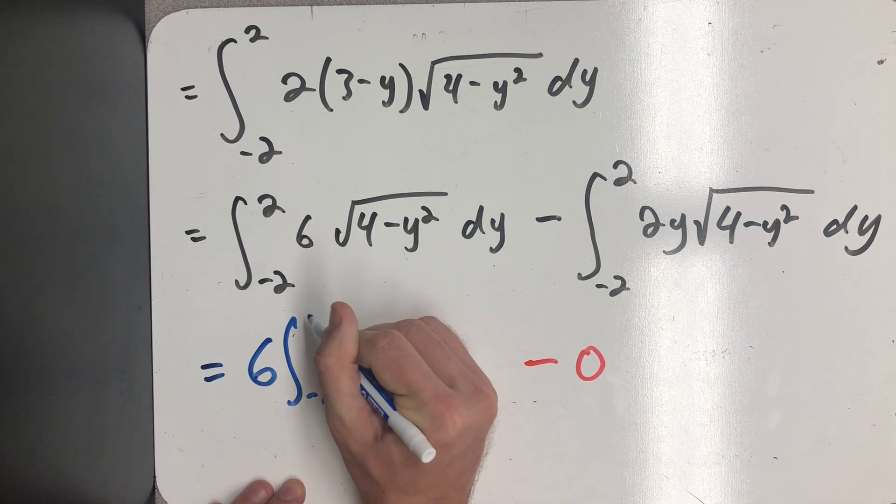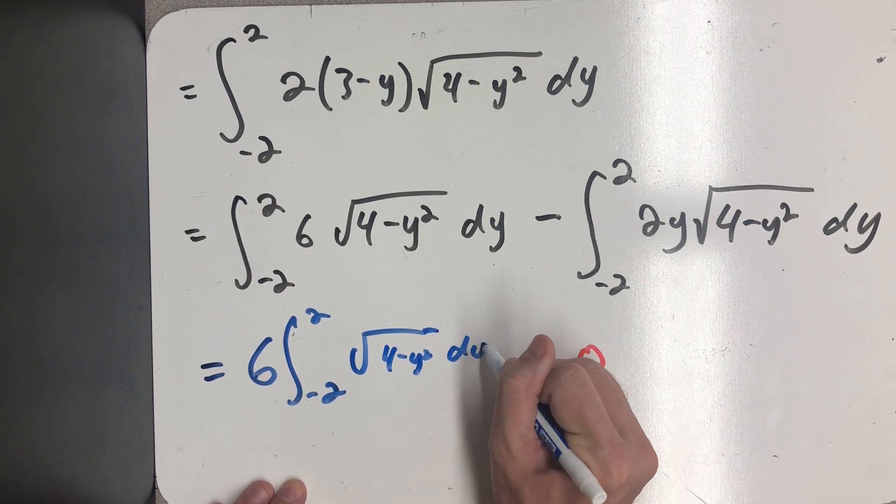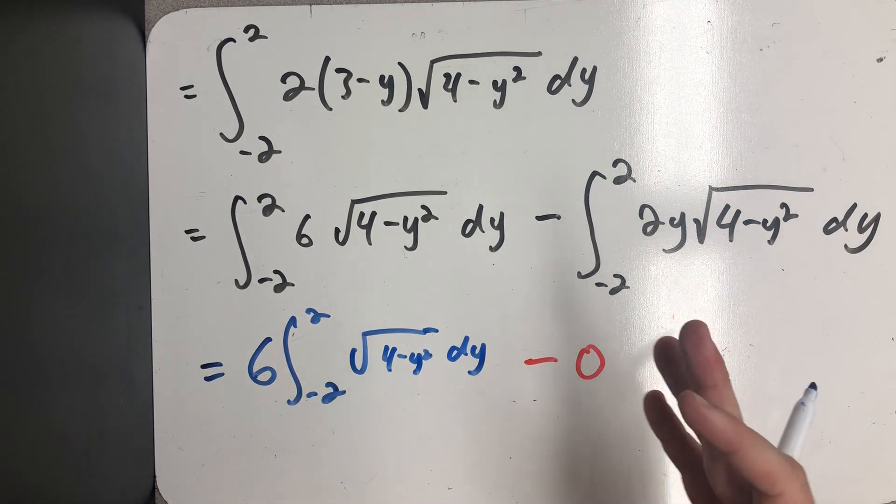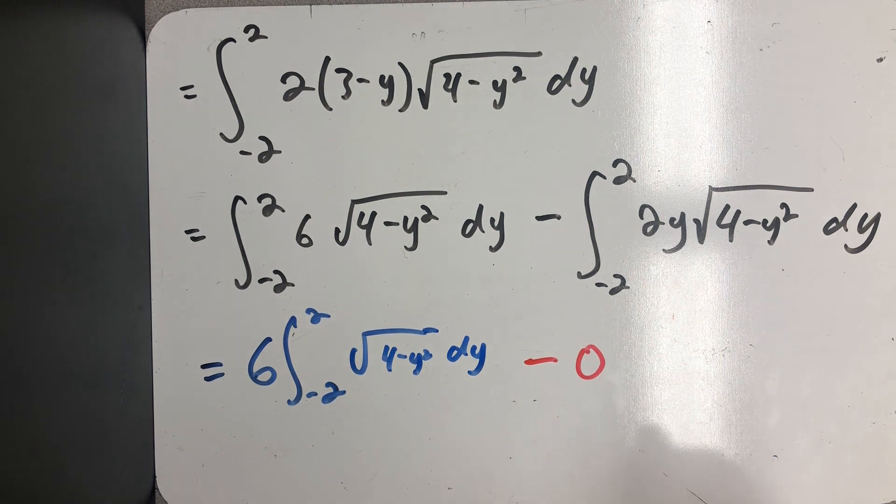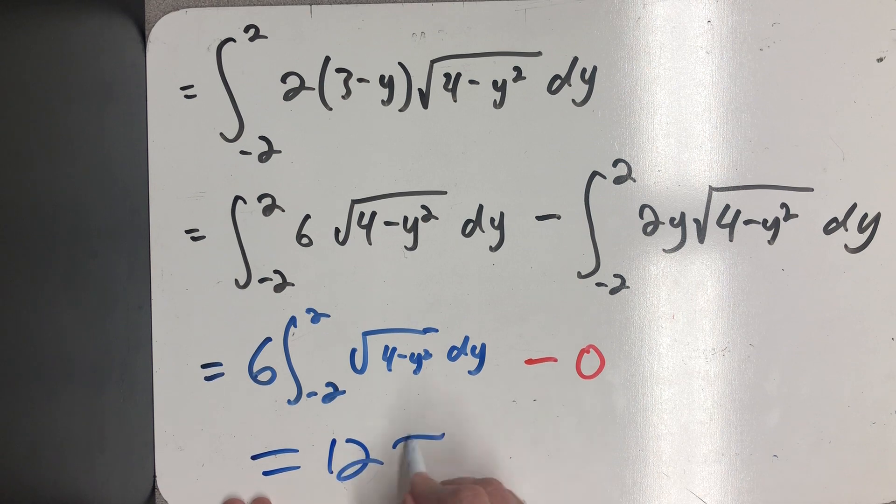And then this is six times an integral that is really just an area calculation. Again, this would be the right side of a circle of radius 2. So again, that integral is 2 pi times 6 is 12 pi.